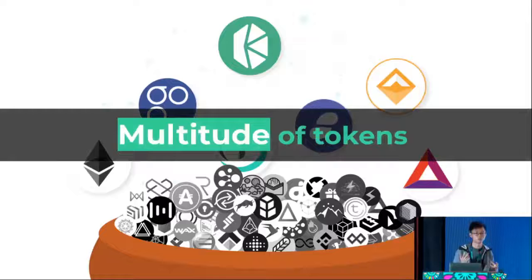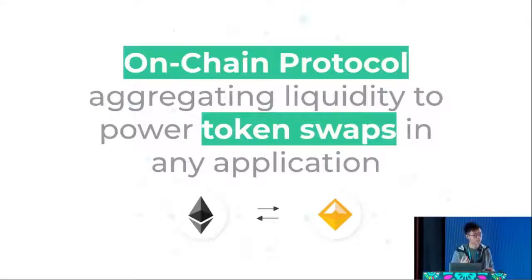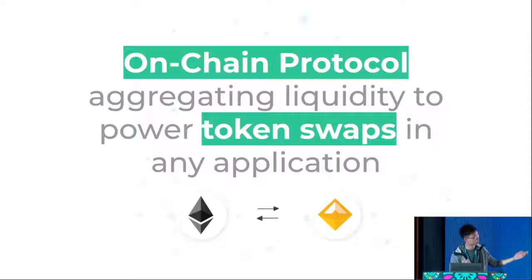With this multitude of tokens, you cannot really expect users to swap from one token to another without some kind of platform. So that's exactly what we try to solve here at Kyber — we aggregate liquidity to power token swaps in any applications. For your users, all you need to do as you build your application is just integrate with us, and your users will be easily able to swap from one token to another, for example from Ether to DAI. We have makers and takers. In our terminology, makers are liquidity providers, and that will be the highlight of my talk today.